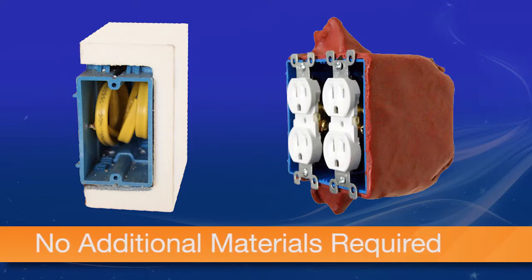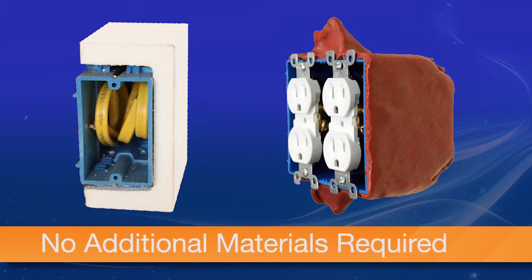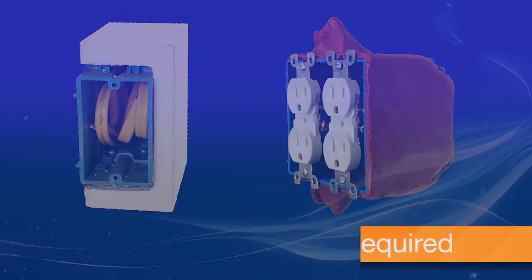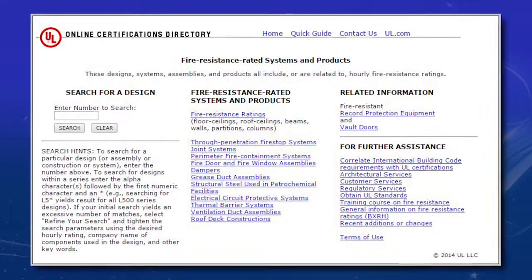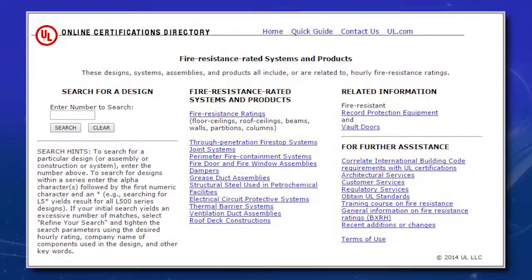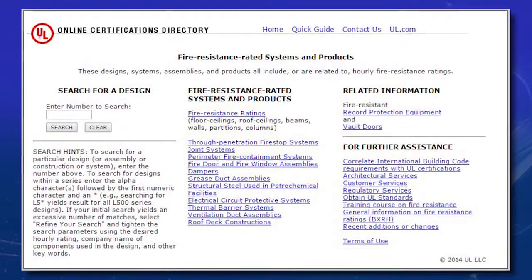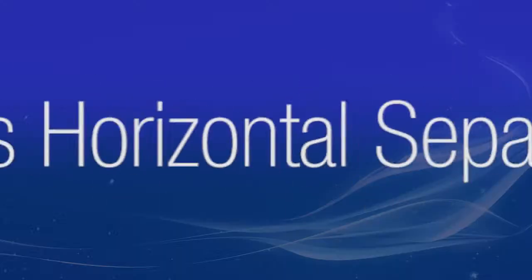Three-inch horizontal separation is approved in all U300 wall series configurations, meaning all wall designs found in the UL fire-resistive directory from U301 through U399 including those staggered stud designs and separated wall designs.